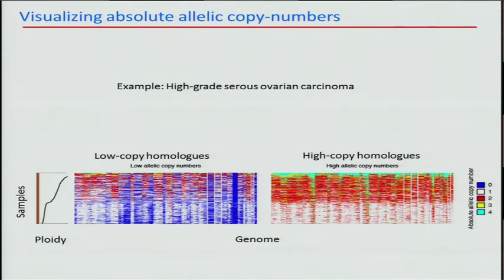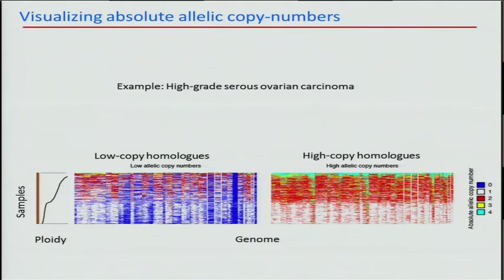The additional information from absolute allelic copy number data allows you to make a more precise determination of whether an individual tumor went through genome doubling. Visualizing both the low copy homologs on the left and high copy homologs on the right, sorted by ploidy, you can see a transition at the inflection point from low homolog copy numbers of 0 and 1 to 0 and 2, and on the right from 1 and 2 to 2 and 4. This is precise evidence of genome doubling, and we formalized this with a statistical simulation giving p-values, though it's actually pretty obvious when you look at the allelic copy data.